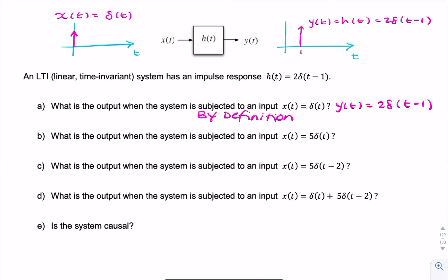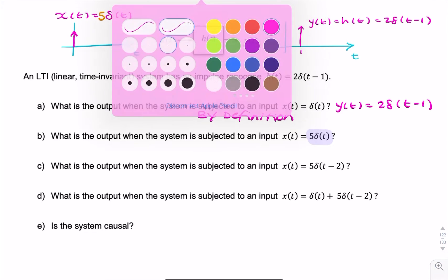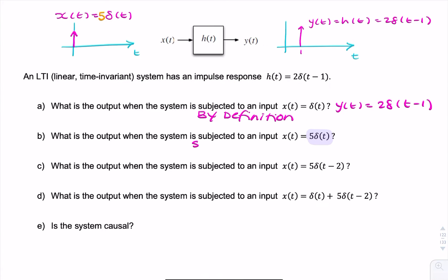Part B asks, what's the output if the input was a scaled version of an impulse? So if the input wasn't simply a delta function, it was 5 times a unit impulse. So if we use the scaling property...